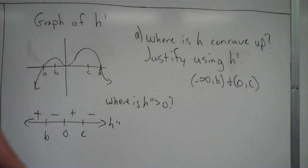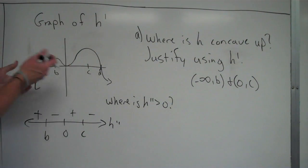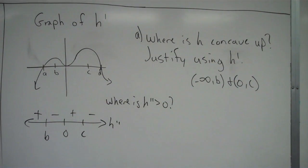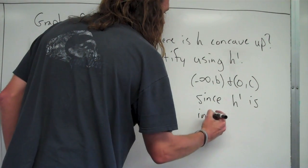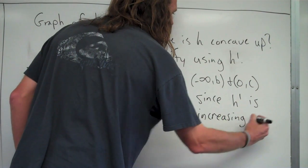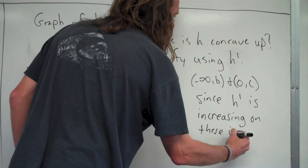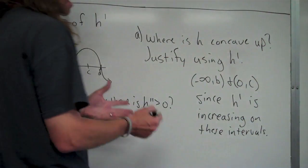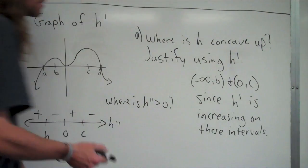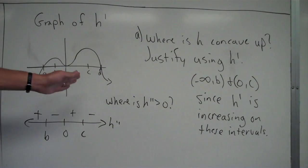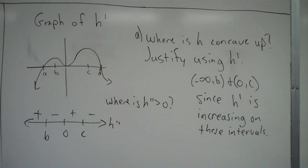Now, notice how we justify using H prime — that's a typical AP thing they would ask on a problem like this. What we did is we looked at H prime to find where the slopes were positive, or where H prime was increasing. I'll write: since H prime is increasing on these intervals. Make sure you include 'on those intervals' — don't just say since H prime is increasing, because H prime isn't always increasing, only on those particular intervals. That is why H is concave up on those intervals only.